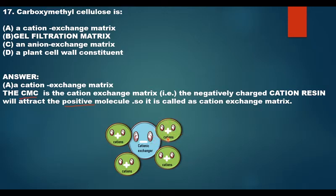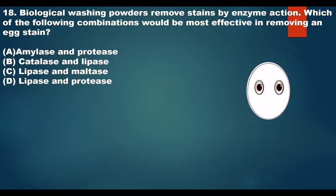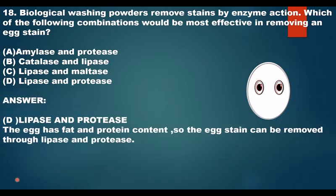Biological washing powder removes stains by enzyme action. Which combination would be most effective in removing an egg stain? The answer is D: lipase and protease. The egg has fat and protein content, so the egg stain can be removed through lipase, which digests the lipid content, and protease, which digests the protein content.